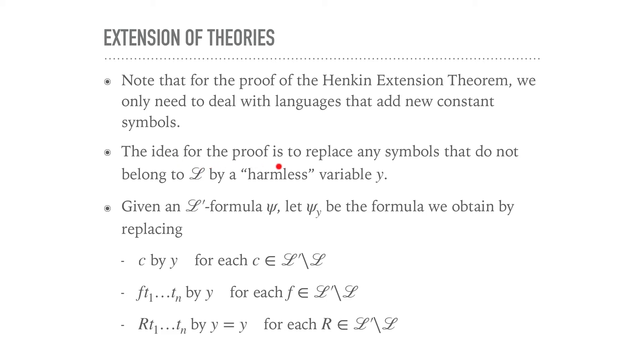And the idea is to replace any symbols that do not belong to L by a harmless variable y. So namely, given an L'-formula ψ, let ψ_y be the formula obtained as follows. So now we need to turn this into an L-formula. So if we have a constant symbol that is not in L, but in L', we'll just replace c by y. So if you do the Henkin, only focus on the Henkin case, you're already done. So that's the only case you need to consider. Well, if we have a function application here, we just replace all of that function term here by y2. And if we have a relation symbol, a relation atomic formula, we just replace this by the formula y equals y. So very harmless indeed looking.